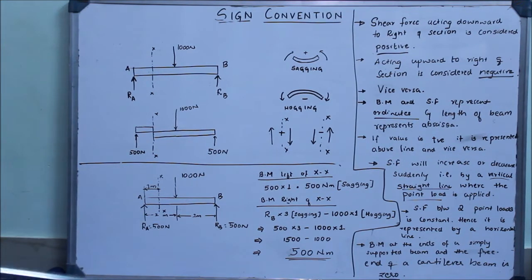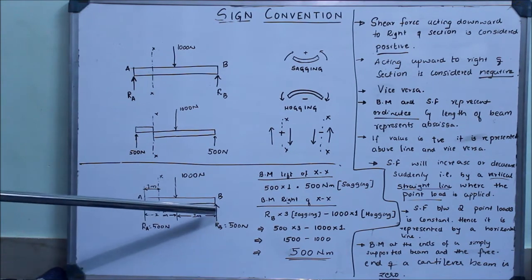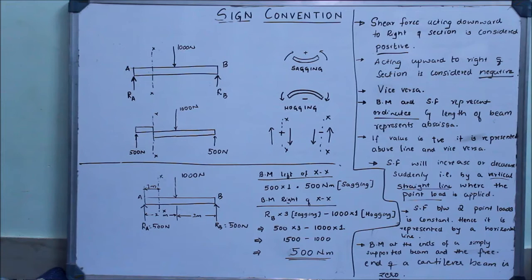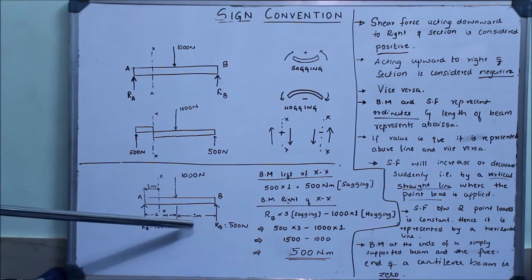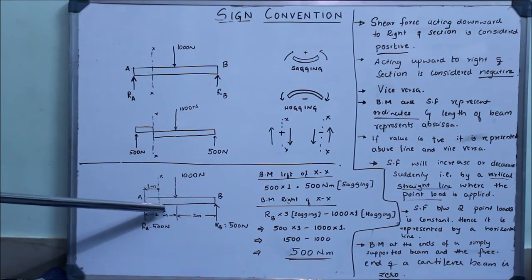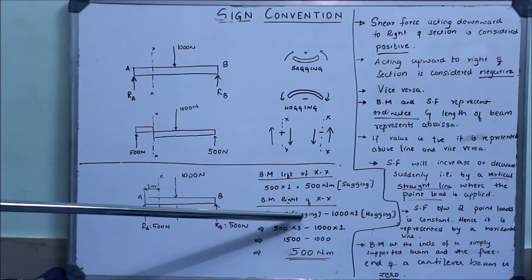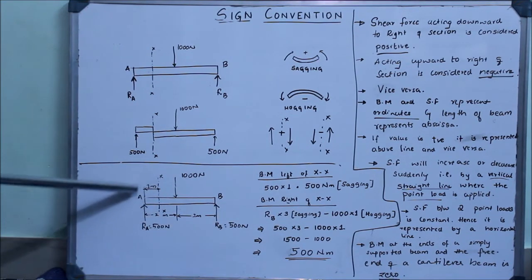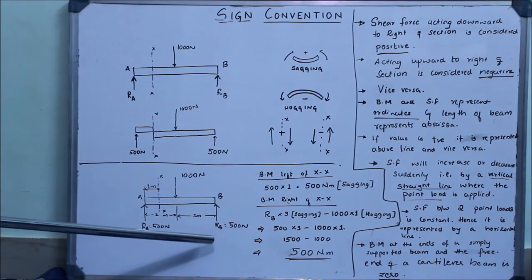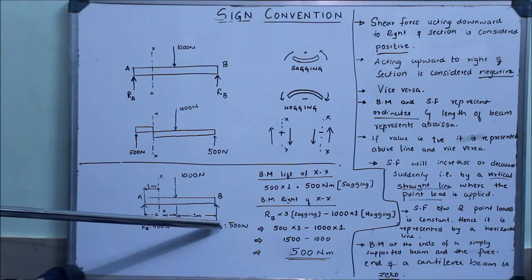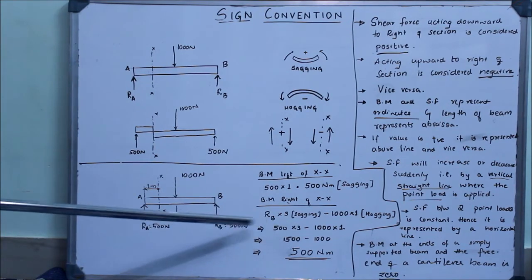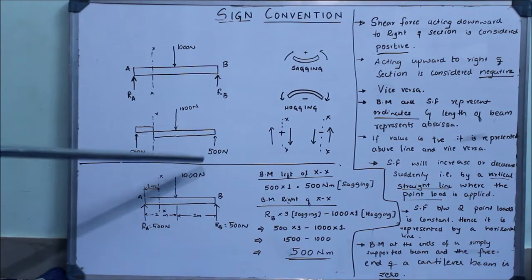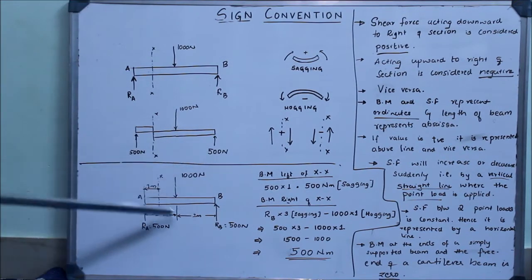Now let me say I want to consider the right side of the section. I take XX here and consider the right side. We have two forces here: one is the load acting and the other is the reaction. So the bending moment to the right of XX is going to be RB times the distance. RB times (2 + 1) meters, that is 3 meters. This is sagging because we entirely forget about the left side — we consider only the right side here. This is pushing the beam upward, so it is sagging the beam, meaning it is positive: 500 × 3 is positive.